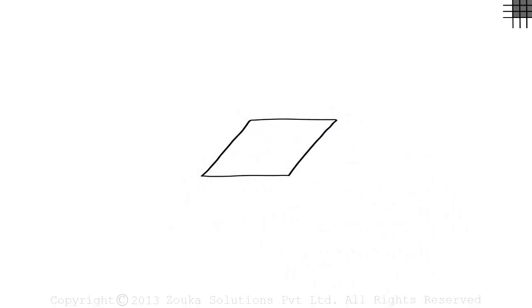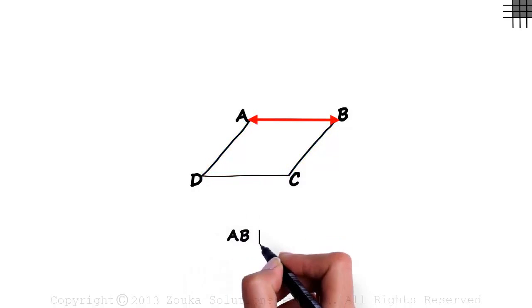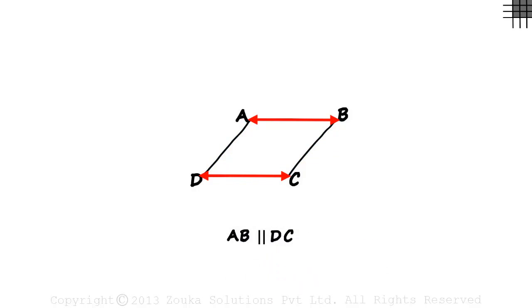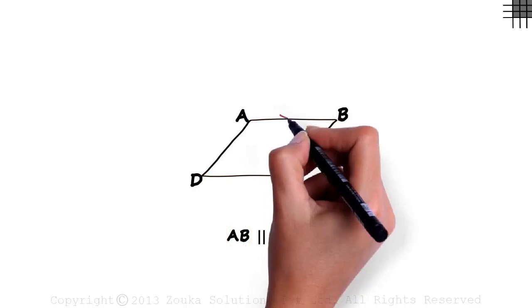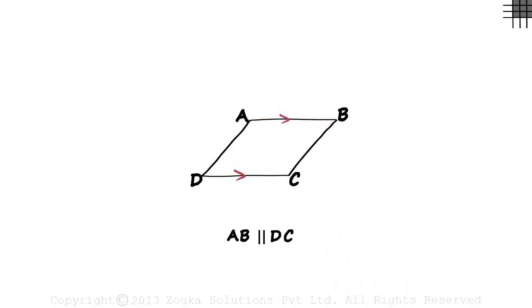Here's another type of quadrilateral — let's name it ABCD. In this quadrilateral, both pairs of opposite sides are parallel. The first pair of opposite sides is AB and DC. We can see that AB is parallel to DC. We use two arrows in the same direction to show that the sides are parallel.